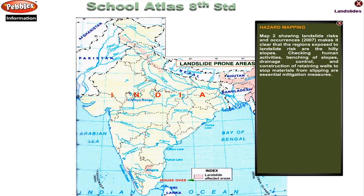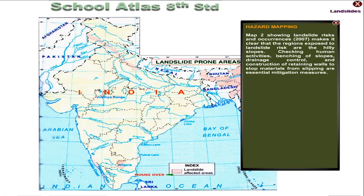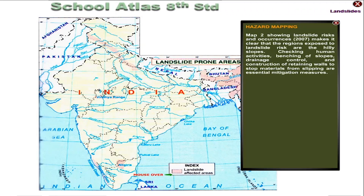Hazard Mapping. Map 2, showing landslide risk and occurrences 2007, makes it clear that the regions exposed to landslide risk are the hilly slopes. Checking human activities, benching of slopes, drainage control and construction of retaining walls to stop materials from slipping are essential mitigation measures.